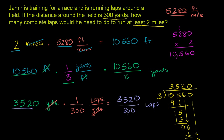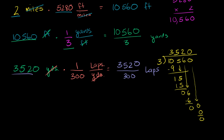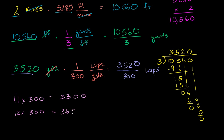We can eyeball this. What is 11 times 300? Well, 11 times 3 is 33, and with two zeros that's 3,300 — a little smaller. What about 12 times 300? 12 times 3 is 36, so that's 3,600. Since 3,520 is between 3,300 and 3,600, when we divide by 300 we get something between 11 and 12 — so the exact number of laps is a little bit less than 12.